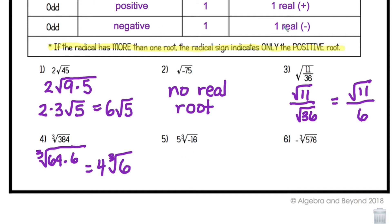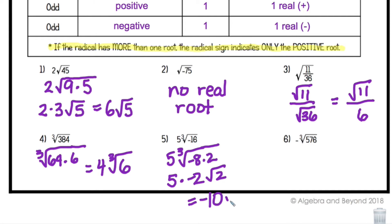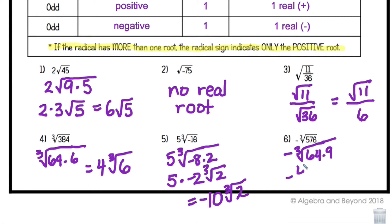Number 5 is the cubed root of a negative, so I know I have one real negative root. I break down negative 16 as negative 8 times 2. Negative 8 is negative 2 cubed, so I pull out a negative 2. Combined with the 5 outside, I get negative 10 times the cubed root of 2. Number 6 has a negative on the outside with the cubed root of a positive, so I have one positive root. 576 divided by 64 gives 64 times 9. A 4 comes out, leaving the cubed root of 9. So the answer is negative 4∛9.